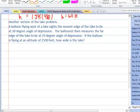The balloonist then measures the far edge of the lake to be 25-degree angle of depression. So if the balloon is flying at an altitude of 2,500 feet, how wide is the lake?